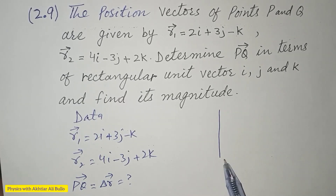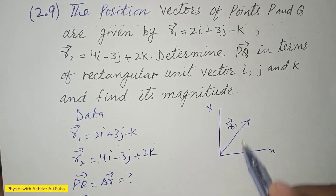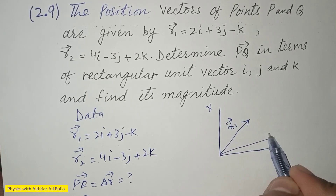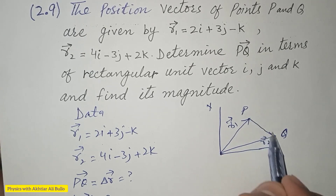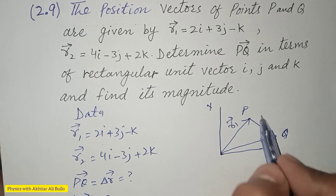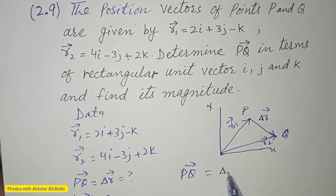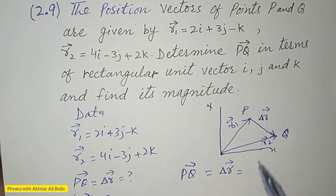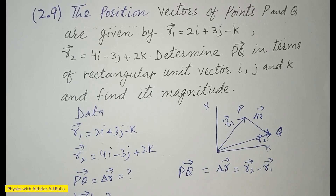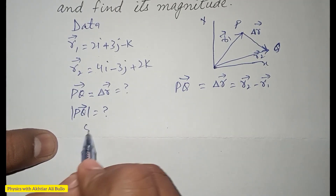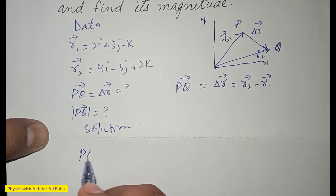This is the x-axis and this is the y-axis. r1 is this vector and r2 is this vector. This point is P and this point is Q. So the difference, PQ, which equals delta r, means PQ = delta r = r2 - r1.